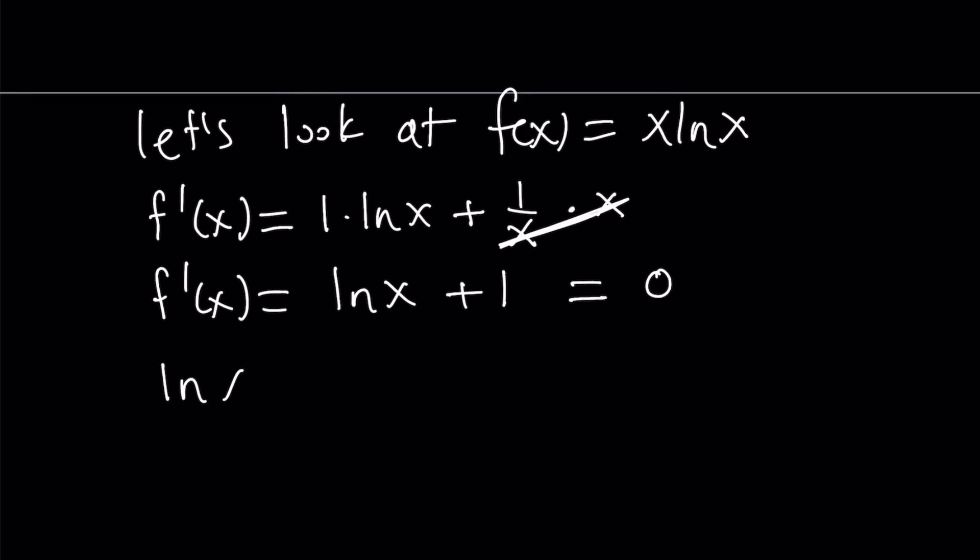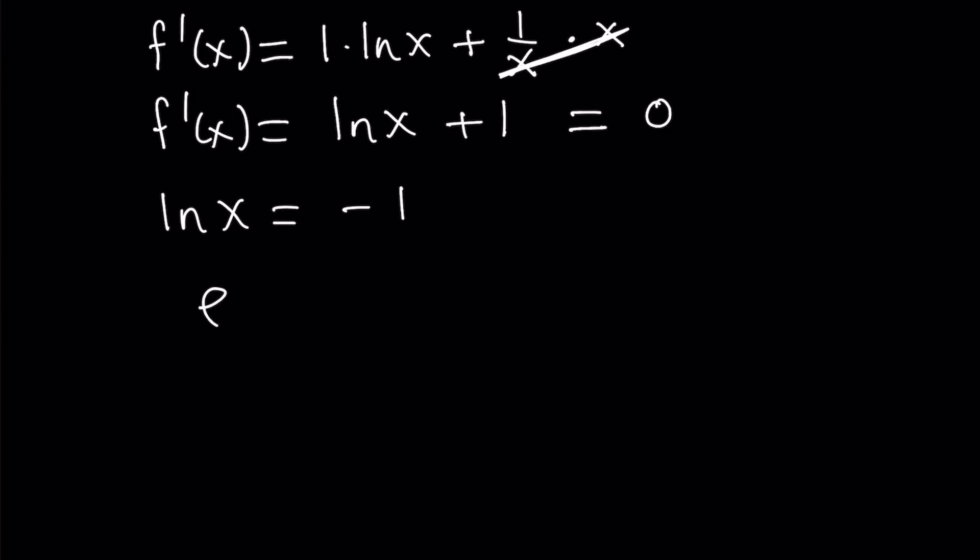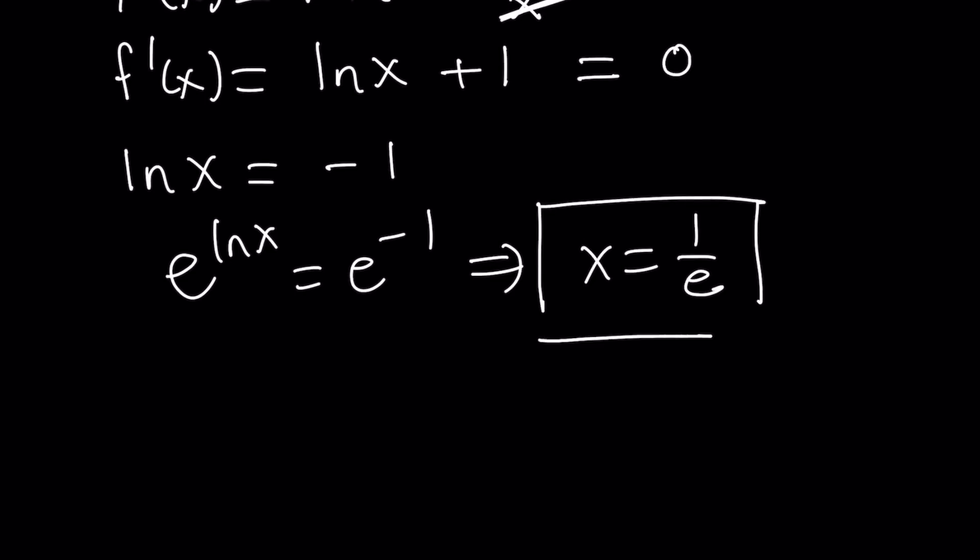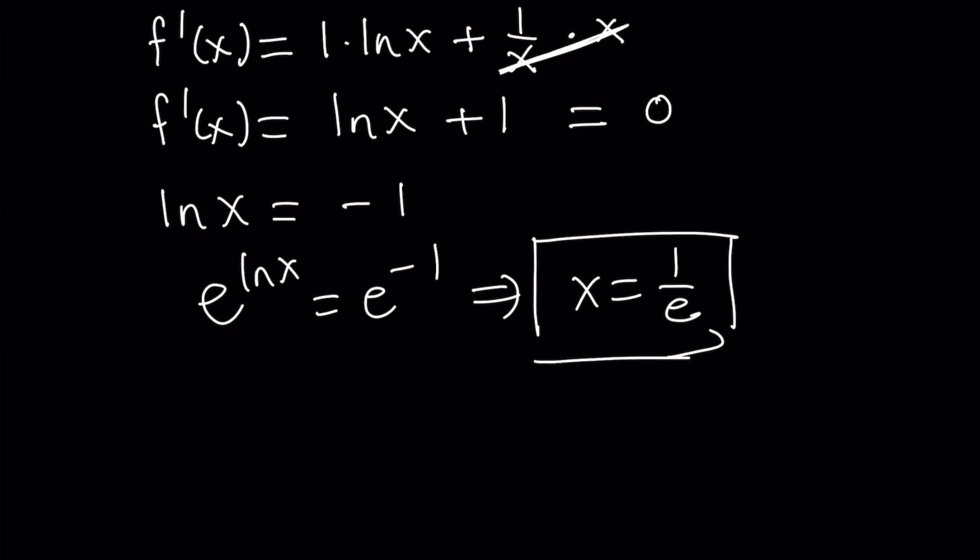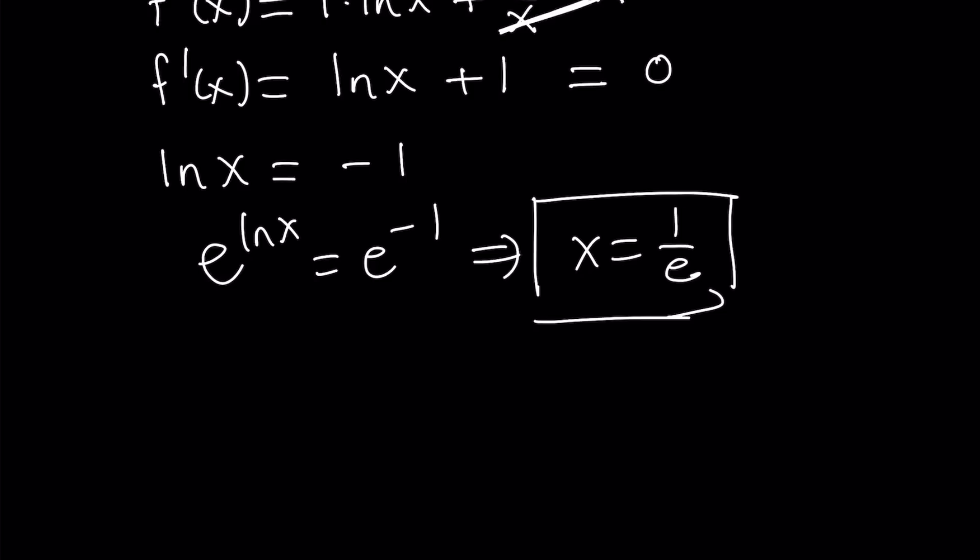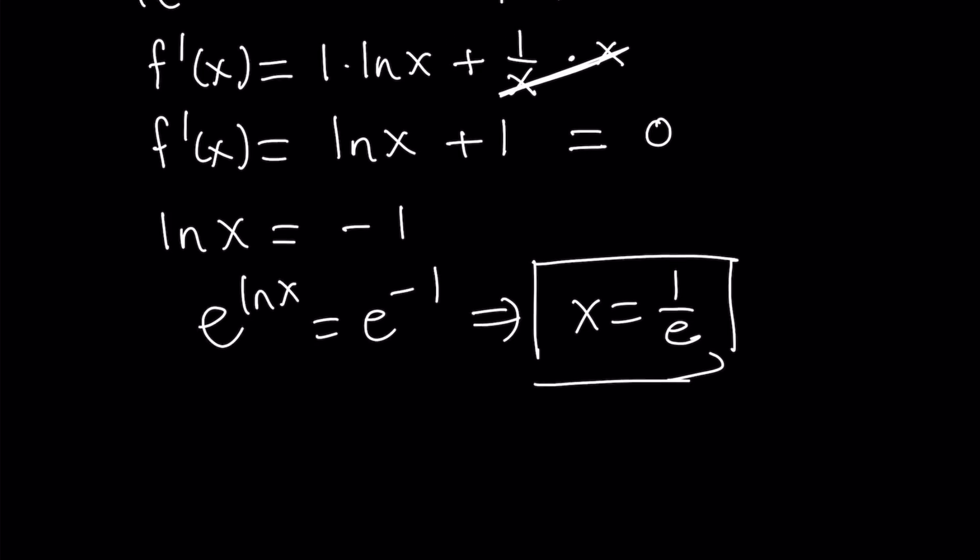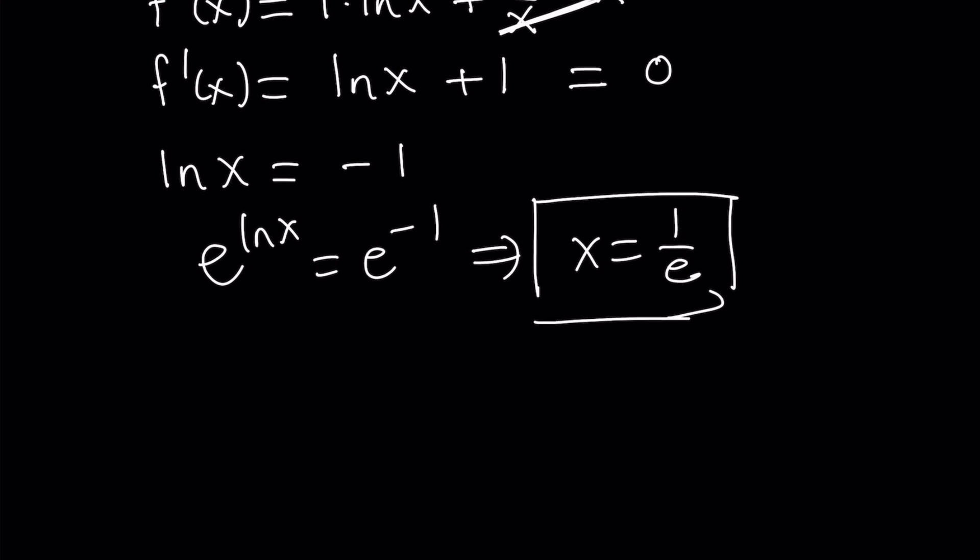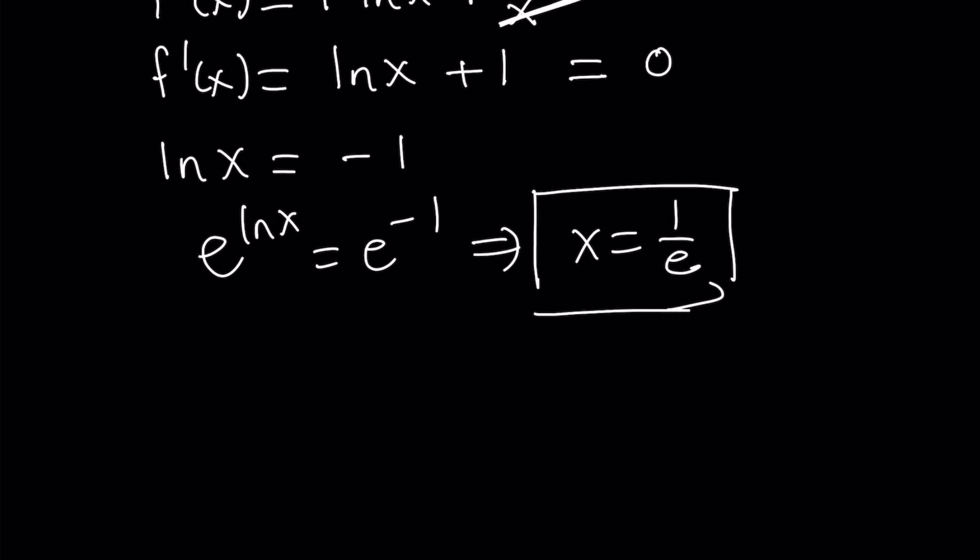From here, we get ln x equals negative 1. And then, if you do e to the power of both sides, like before, you get the following. And e to the power of ln x is equal to x. So you get x equals 1 over e, the reciprocal of e. e is about 2.7, so you can safely say that 1 over e is going to be less than 0.4. It's a small number between 0 and 1.